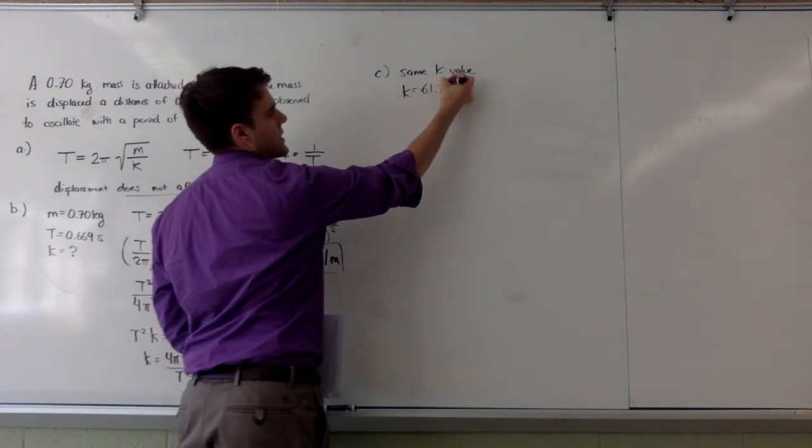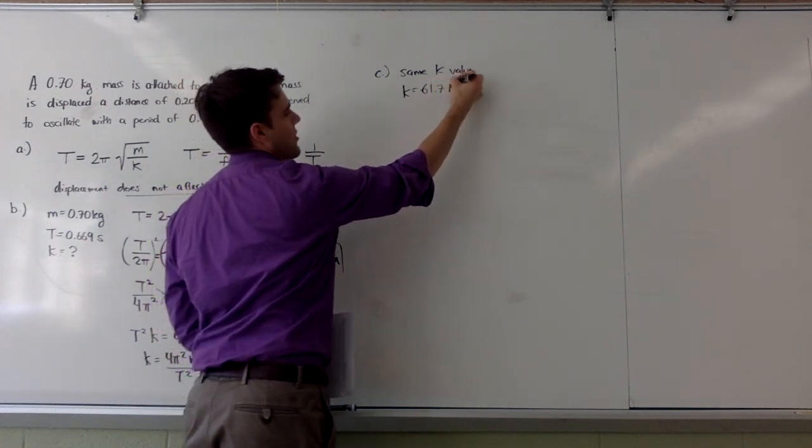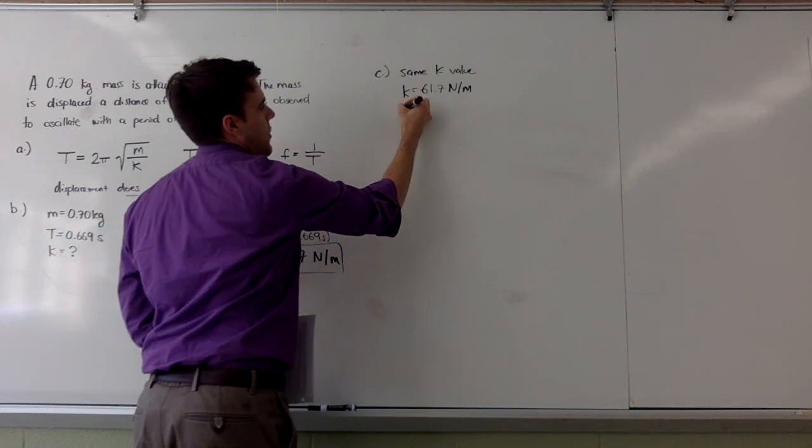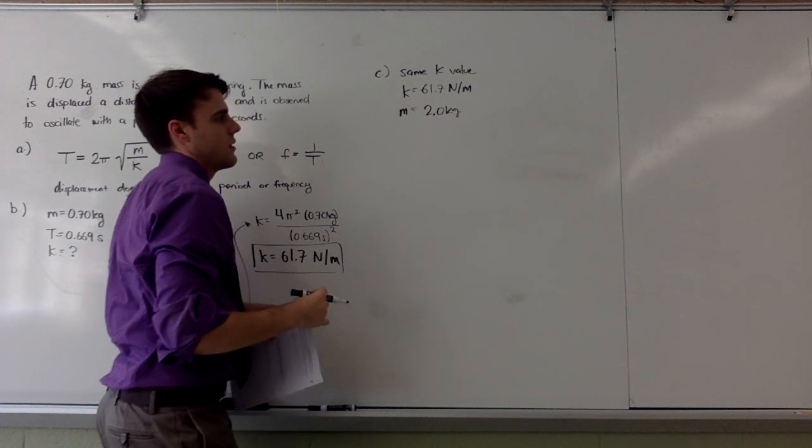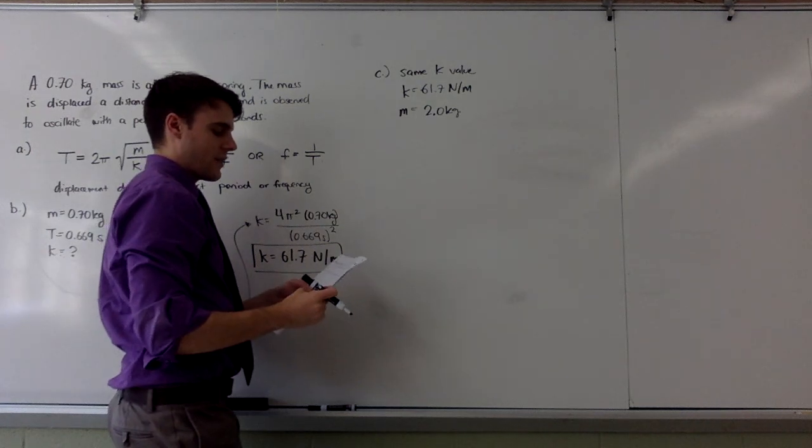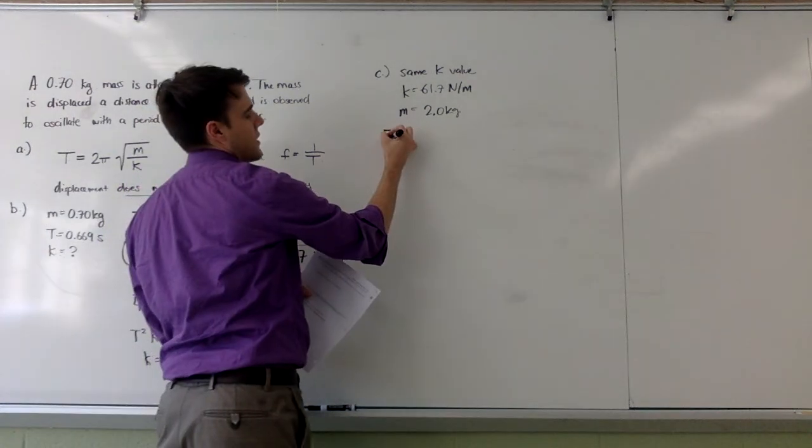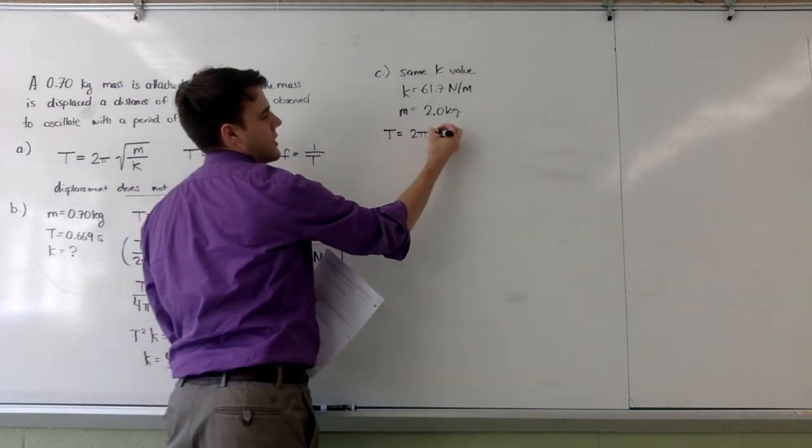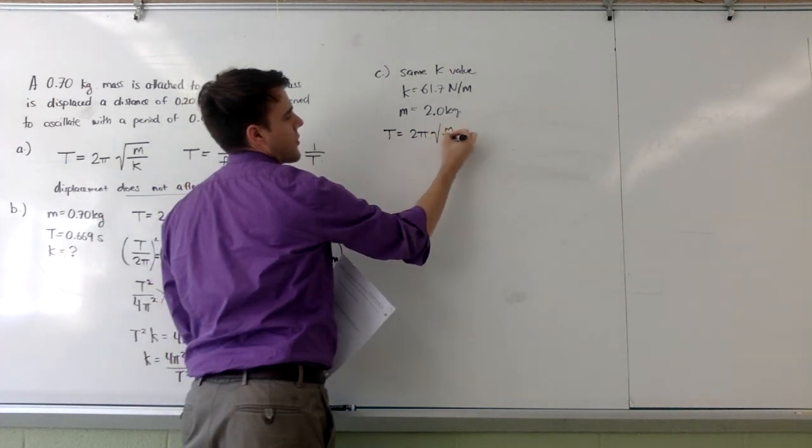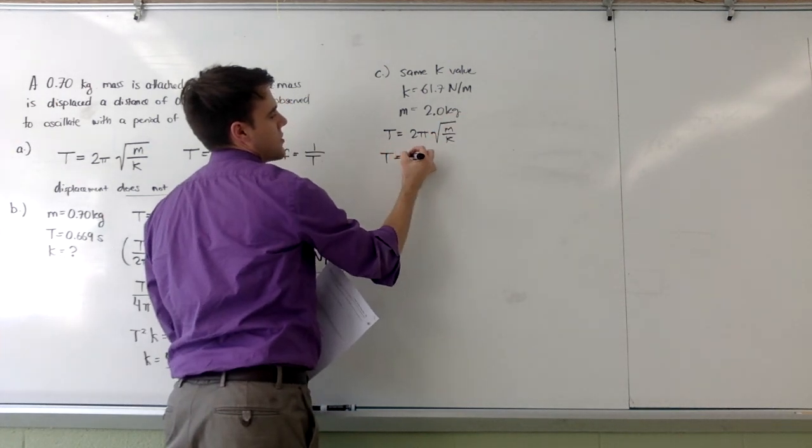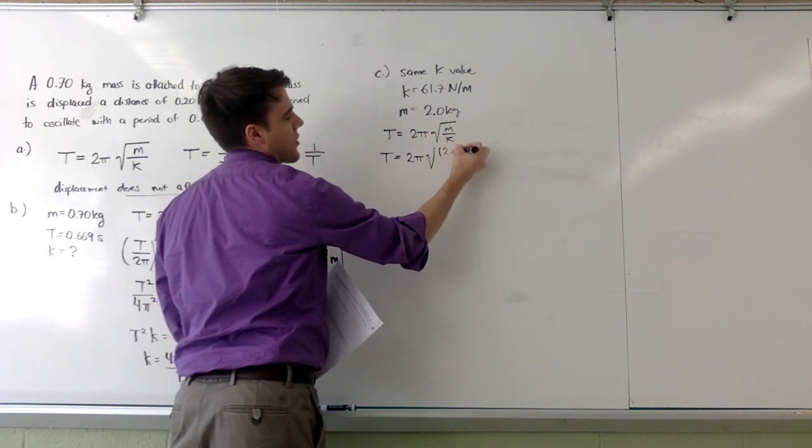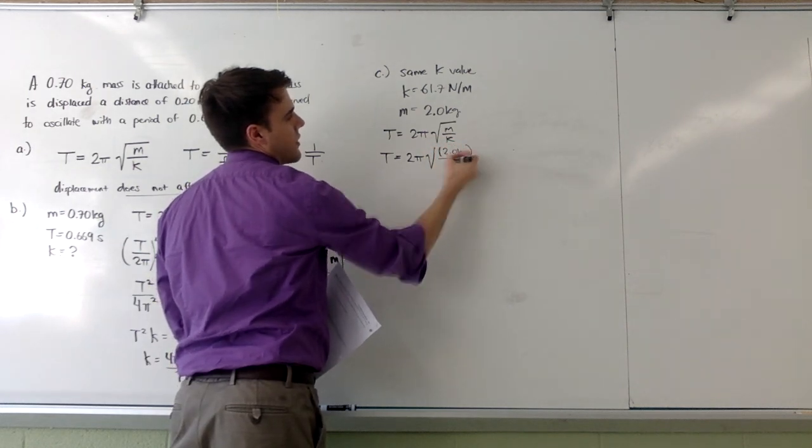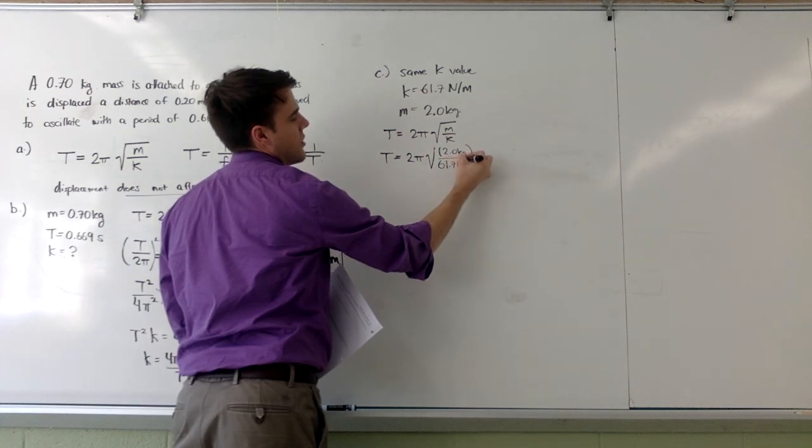My k, I just calculated, I will use is 61.7 newtons per meter. My new mass is 2 kilograms. And that's all I need in order to calculate a period and therefore frequency. Starting again with t equals 2 pi times the square root of m over k. Simply need to substitute for mass and spring constant. So, that's 2 kilograms over 61.7 newtons per meter.